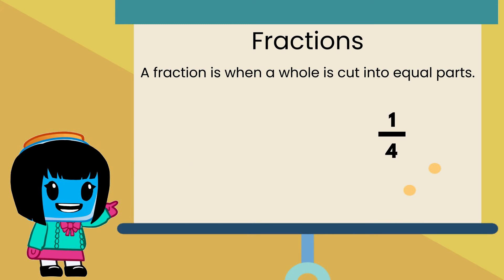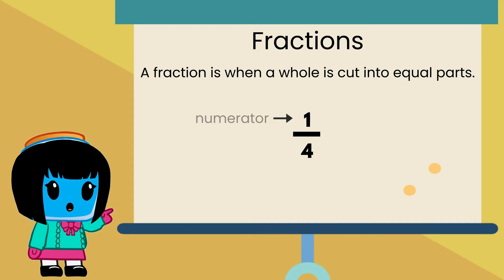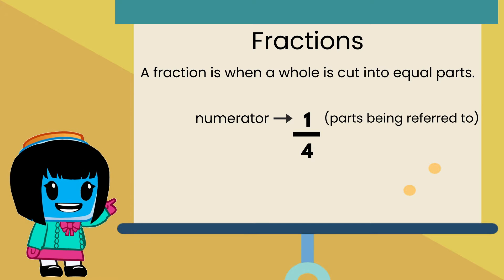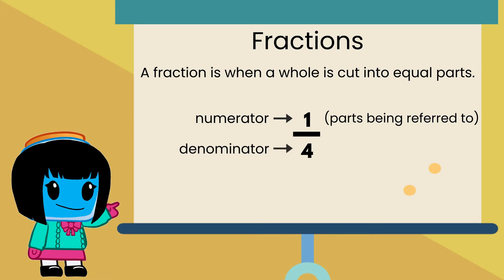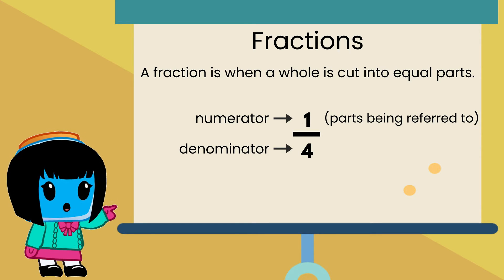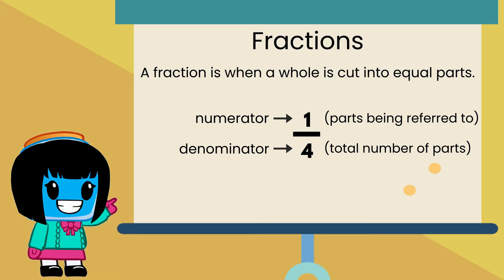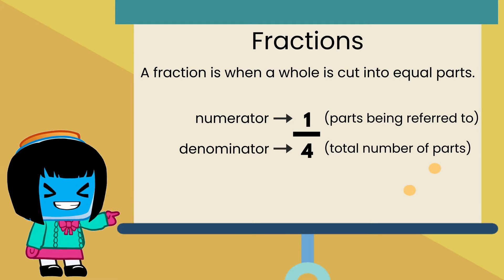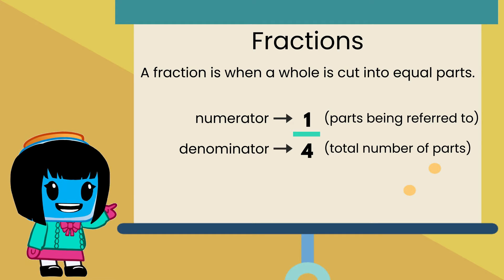In writing fractions, the numerator is on the top, which is the number of parts being referred to. The denominator is at the bottom, which is the total number of parts the whole is broken into. The two numbers are separated by a short horizontal line.